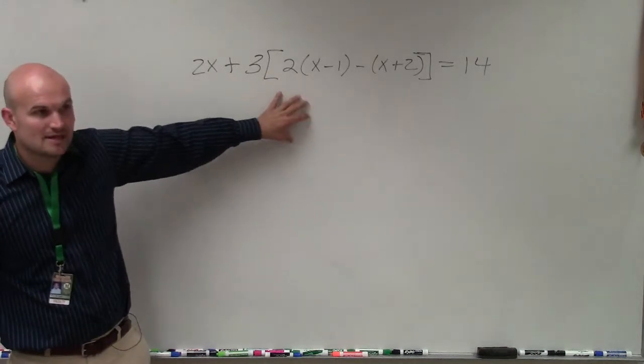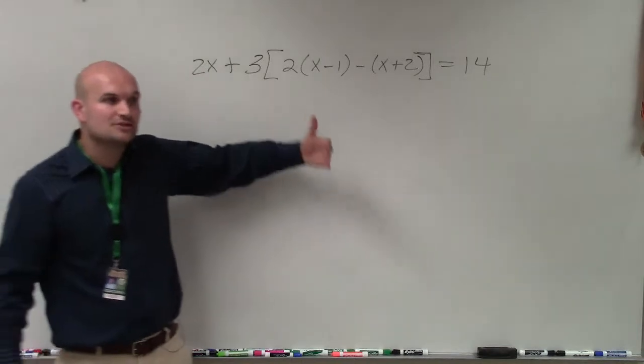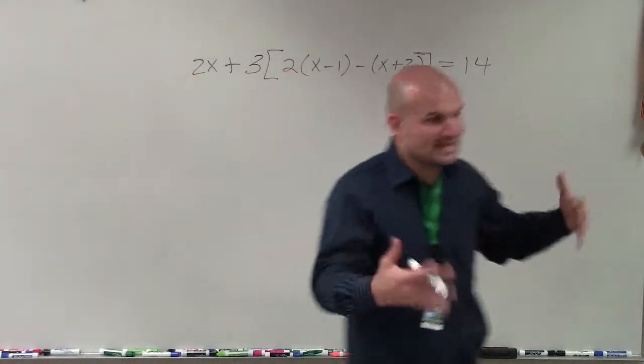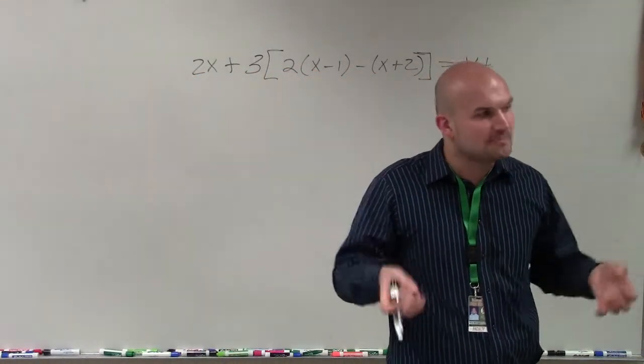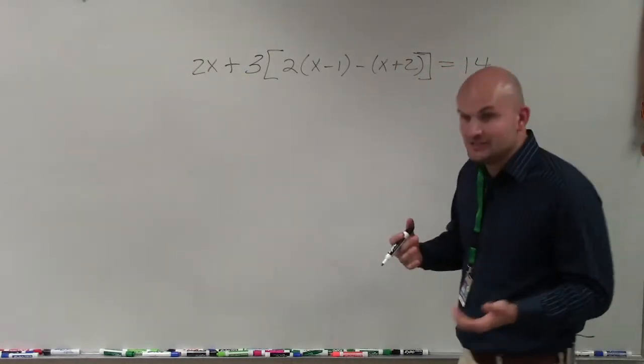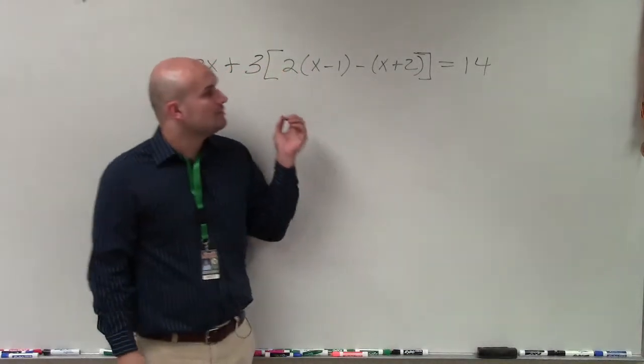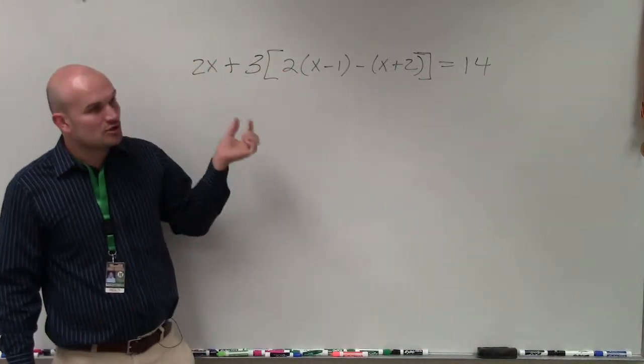The only difference with this type of problem is it's not anywhere near a two-step equation, right? So what we want to do when we have multi-step equations, the only added element is now to simplify to a two-step equation. So when we simplify, we need to use the order of operations, meaning first thing is parentheses, right? When we do parentheses, we want to do the innermost parentheses first.